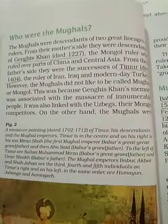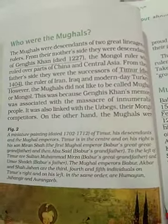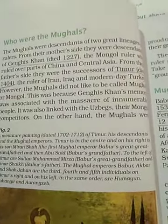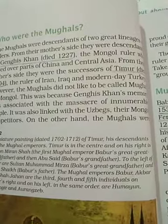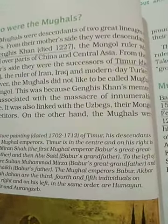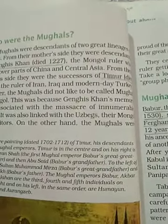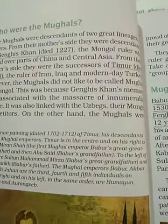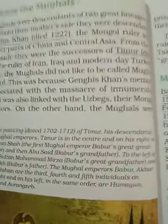Who were Mughals? The Mughals were descendants of two great lineages of rulers. From their mother's side, they were descendants of Genghis Khan, who died in 1227 — the Mongol ruler who ruled over part of China and Central Asia. From their father's side, they were successors of Timur, who died in 1404.